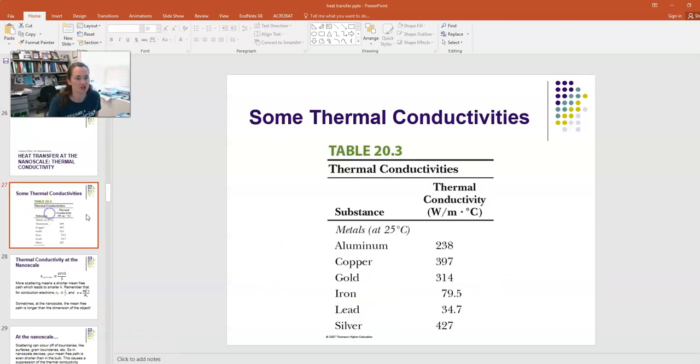To remind you, we discussed the material parameter that governs the rate of heat transfer via conduction. That formula is that the power or rate of heat transfer is KA times dT/dx, where K is the thermal conductivity, A is the cross-sectional area, and dT/dx is the temperature gradient. Here are some values of thermal conductivity. You can see that depending upon the material, the thermal conductivity can be quite different.